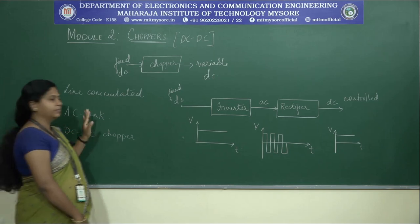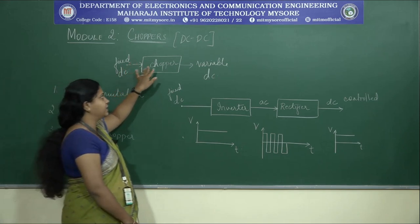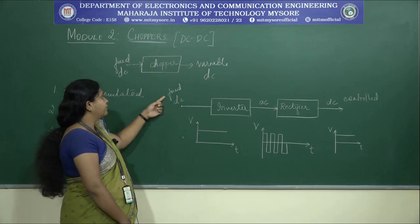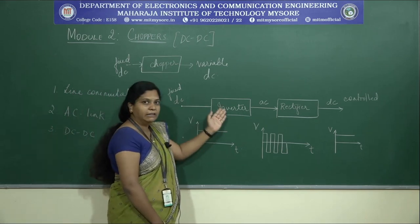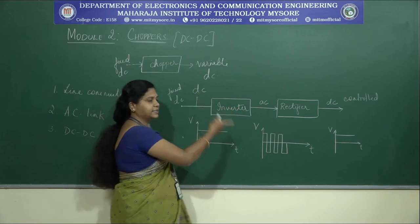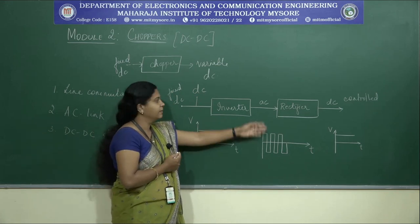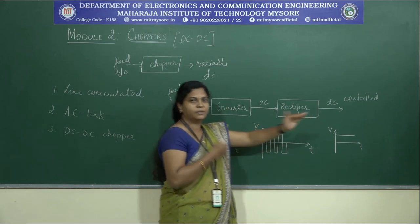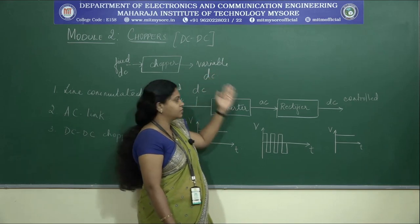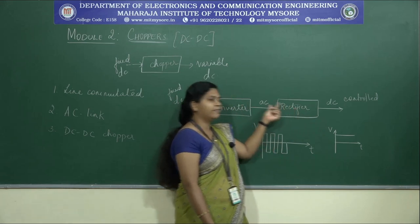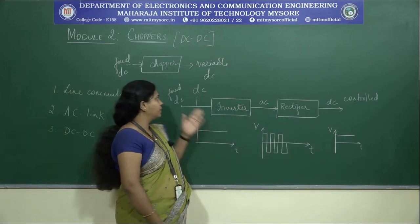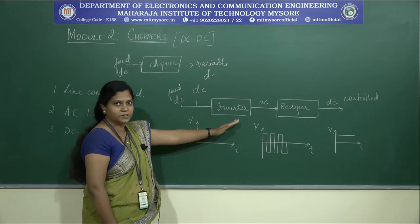The next is the AC link method, where we convert fixed DC to variable DC by using an AC link. A fixed DC battery is converted to AC using an inverter, then a rectifier changes the level — for example, from 12 volts reduced to 5 volts. This is one method, but it is a very complicated process.